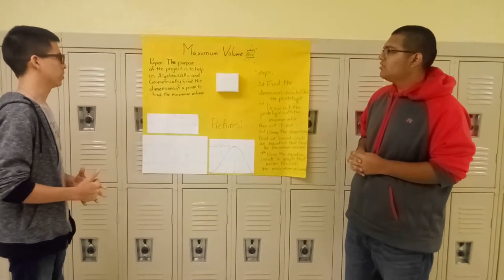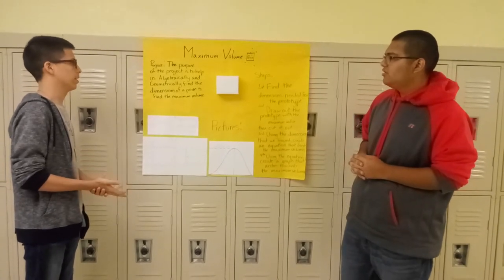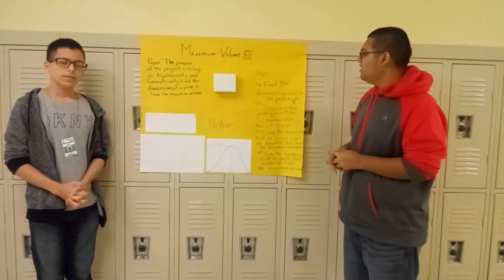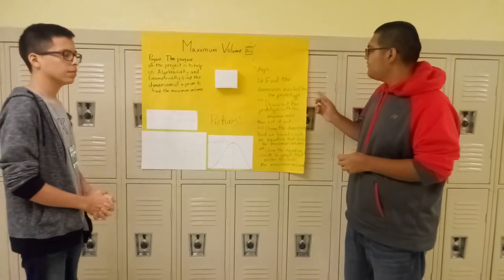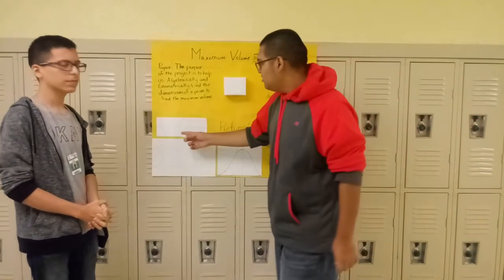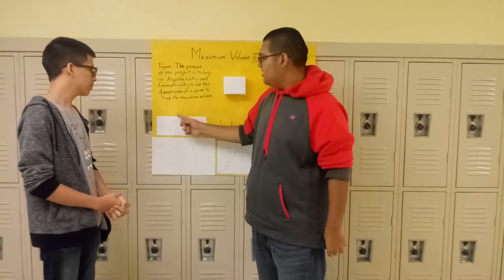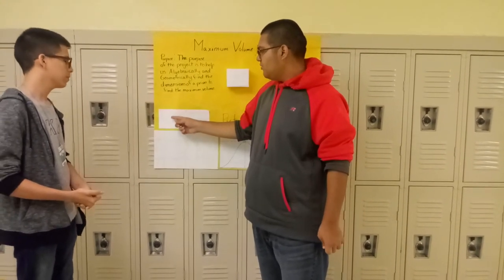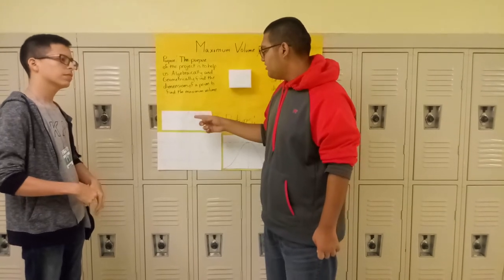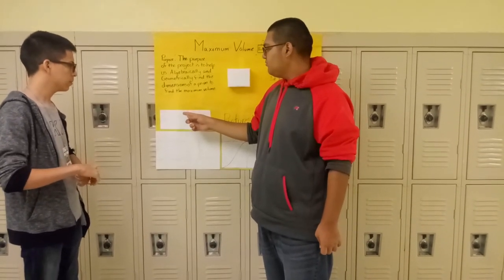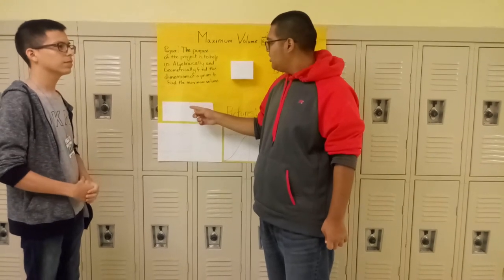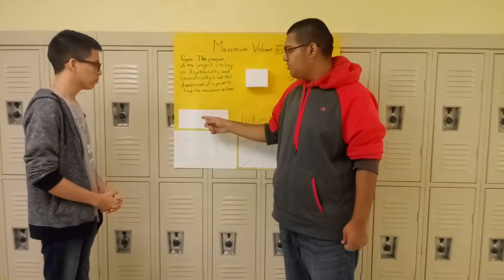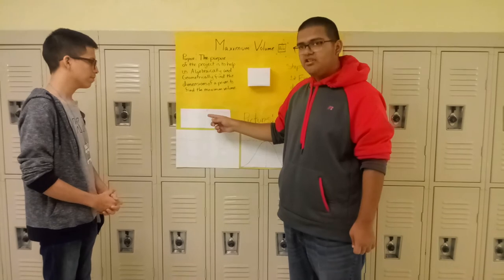The purpose of the project is to help us algebraically and effectively find the dimensions of the box. Our first steps include finding the dimensions needed for the prototype. We need to find the length times width and height. Height will be x, length will be L of x, and width will be W of x. To find the width, we need 2x plus w and that will equal 21.5, and to find the length, we need 2x plus 2L and that will equal 35.5, which are the dimensions of our whole sheet.